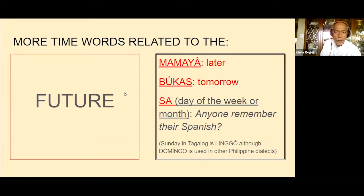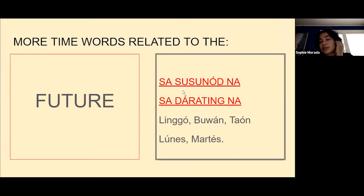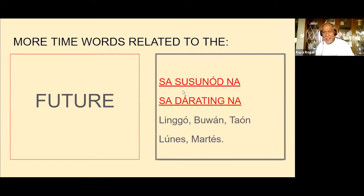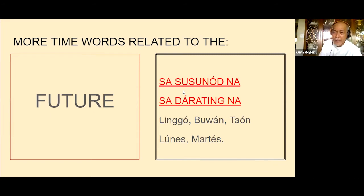Someone asked: what's the difference between sa susunod and sa darating? Sa susunod means 'next' — next week, next month. Sa darating means 'in the coming.' Either way, you can use them interchangeably. Good.